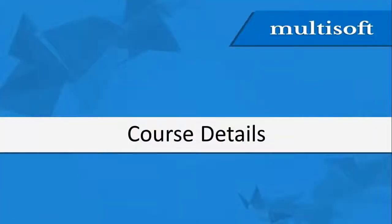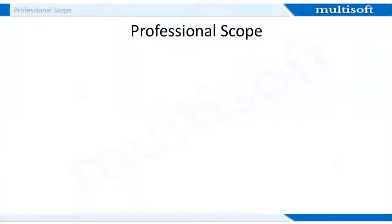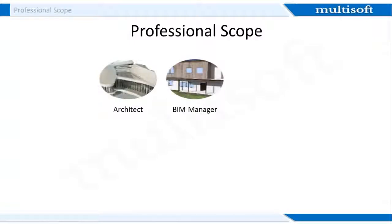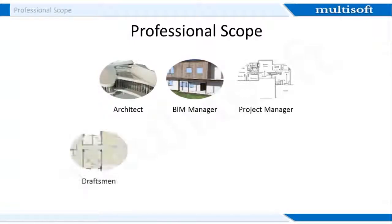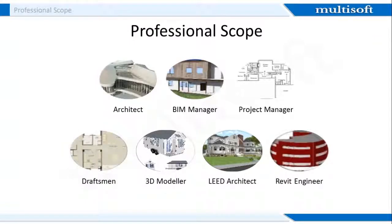Since you now know what Revit Architecture and Autodesk are, it makes sense that I share the course specific details with you. In terms of job roles associated with Revit Architecture, this technology is majorly used by architects, BIM managers, project managers, draftsmen, Revit engineers, 3D modelers, and lead architects. Also, some of the biggest firms in the world like L&T use Revit Architecture for building modeling.